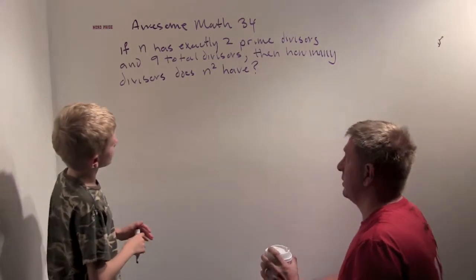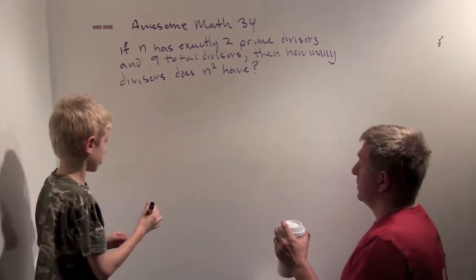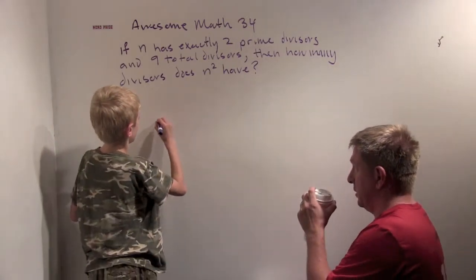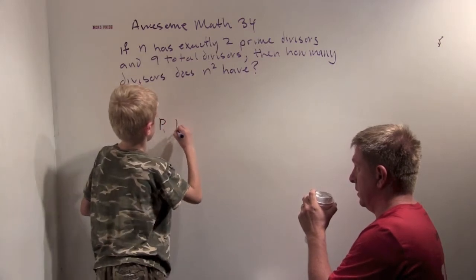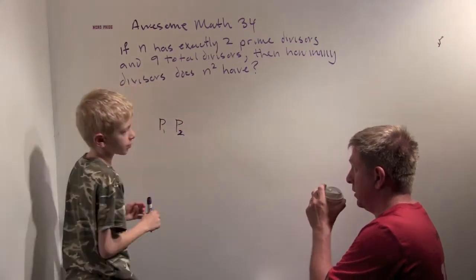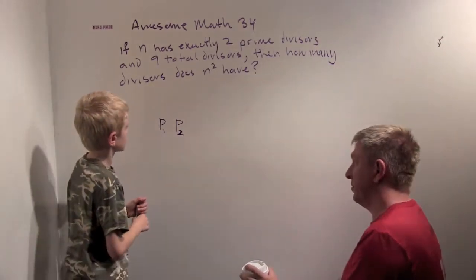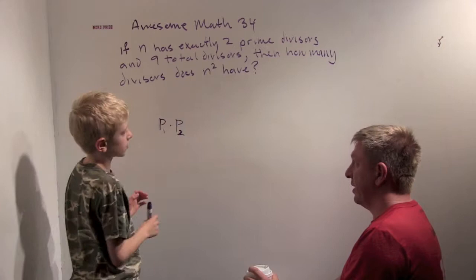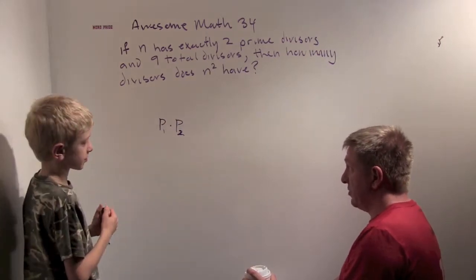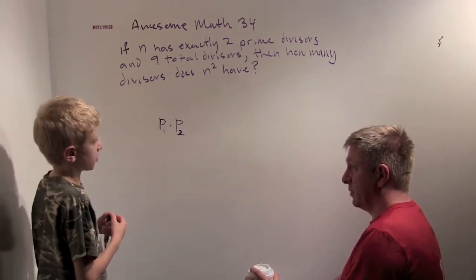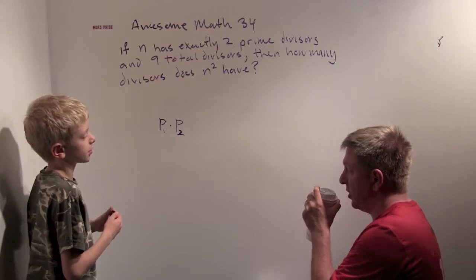We have to have two prime divisors, so we have to have two primes. Prime 1 and prime 2. Okay, so we have prime, and let's put a little dot so we know we're multiplying in there. So we have to have prime 1 times prime 2 as a starting point.